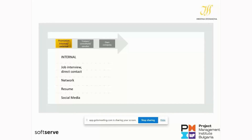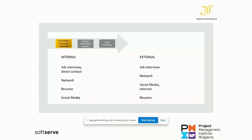Now moving to the external career path. Here I have an arrow showing the three career paths — the more we go to the right, the more tools and efforts you need to put in to communicate your personal brand. For the external move, you need to do a bit more with social media presence and overall internet presence. The importance of social media is higher here compared to internal positions.